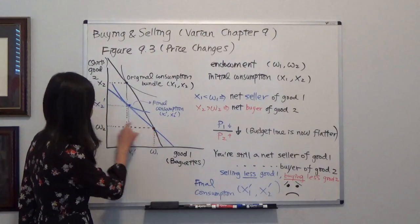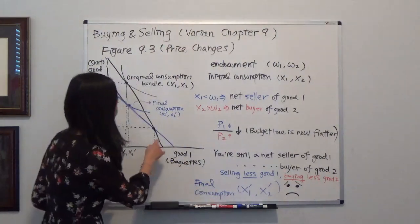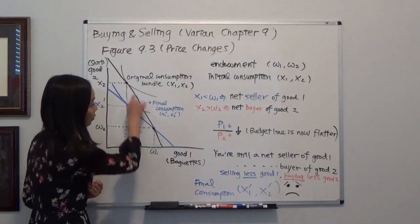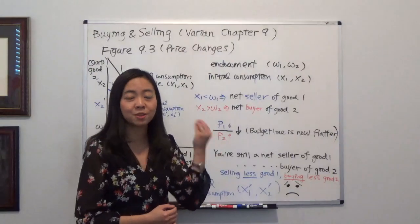That's your initial endowment and the initial budget line is this last one. We know the slope of the budget line is negative P1 over P2.